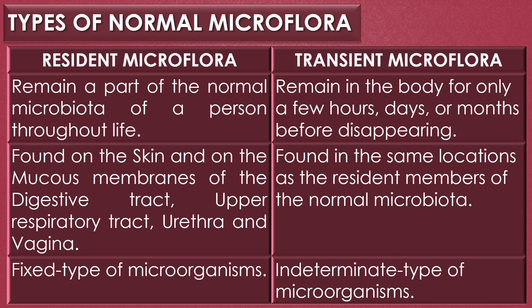The human microbiota are primarily classified into two groups: resident microflora and transient microflora. This table shows the difference between them. The resident microflora remains a part of the normal microbiota of a person throughout life, whereas the transient microflora remains in the body for only a few hours, days, or months before disappearing.